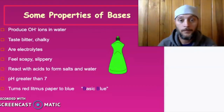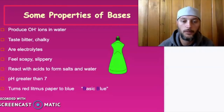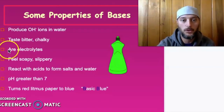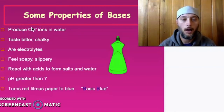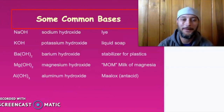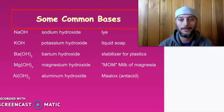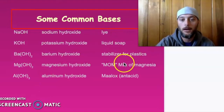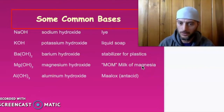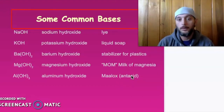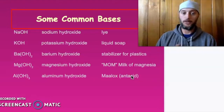Now let's talk bases quickly. The big thing is that bases produce hydroxide (OH⁻) in water — that's kind of our base definition. pH greater than 7 is going to be huge later. Common bases: NaOH is sodium hydroxide, found in lye, which is a really strong cleaner. Potassium hydroxide is used in liquid soaps and stabilizers for plastics. Milk of magnesia settles your stomach. Maalox is an antacid — if you have heartburn and take an antacid, there's an acid-base reaction and your heartburn starts to go away.